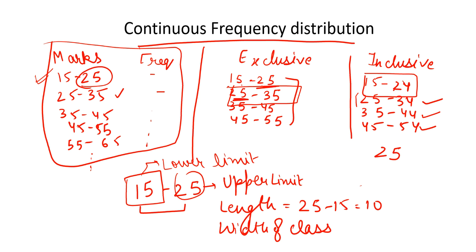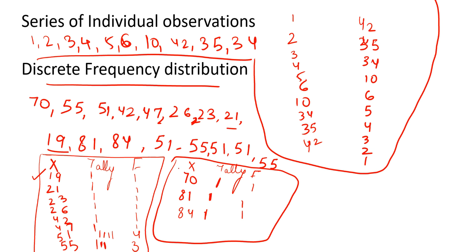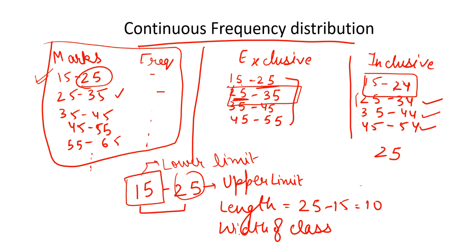So this is my continuous frequency distribution, in which we take intervals. In the series of individual observations, there are no repetitions. This is the key difference between series of individual observations and discrete frequency distributions. I hope you liked this video. Thank you.